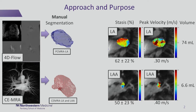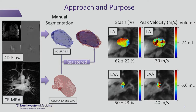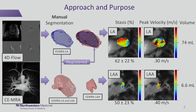We want to use the left atrium and left atrial appendage from the contrast-enhanced scan for the anatomy to delineate the anatomical region, but the flow from the 4D flow scan. So we want to register them together using the left atriums and then apply that registration to the contrast-enhanced LAA in order to get these quantifications.